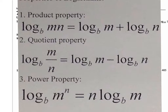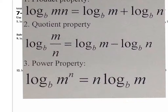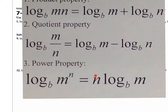The power property is also very useful — probably the easiest one. If you have a power, it can become multiplication by bringing the exponent out to the front. So the n is no longer the exponent; it comes out in front as a coefficient. Or if you have a number multiplying the log, you can raise it up to be the exponent. You can use the property forward or backwards.